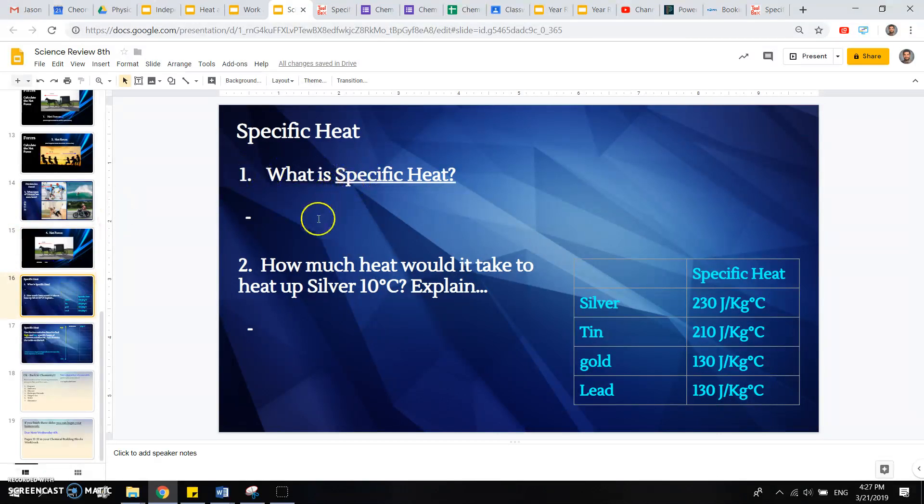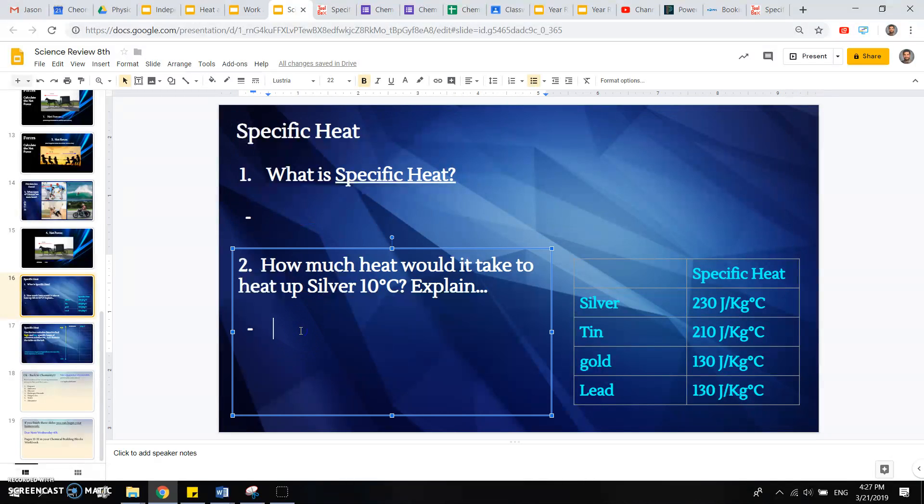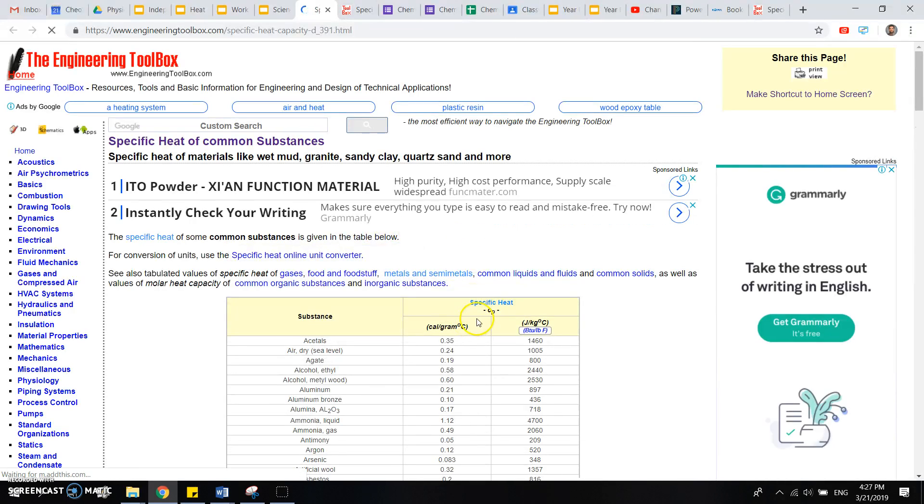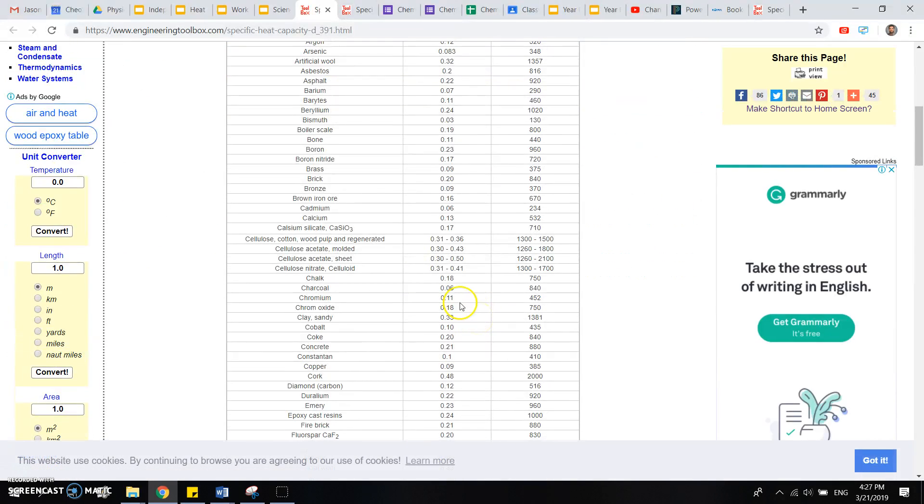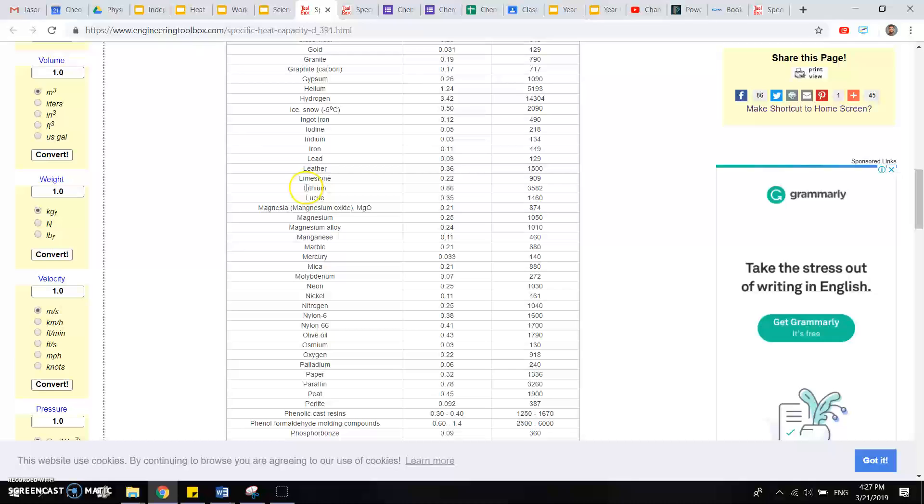And then some problems asking about specific heat. So you'll have to define specific heat. You'll have to solve this problem. And then you'll have to, once again, click this link and research various specific heats of substances. Now that you're more familiar with different chemicals, different elements, you can find maybe the element you used in your periodic table project, maybe some elements in the periodic table that you're now more familiar with, like lithium.